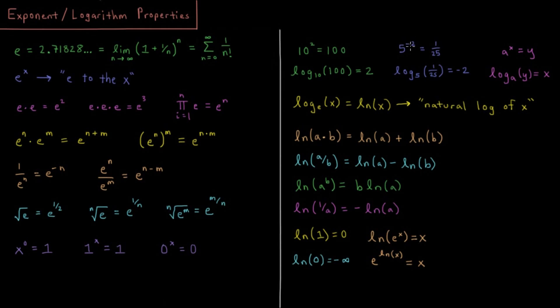So 5 to the negative 2 is equal to 1 over 25, according to our exponent rules. So the log base 5 of 1 over 25 is negative 2. If I take 5 to the power negative 2, I get the number 1 over 25. So in general, a to the x equals y. I can solve for x by saying the log base a of y is equal to x.